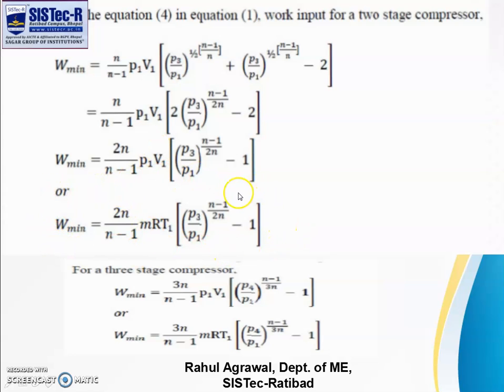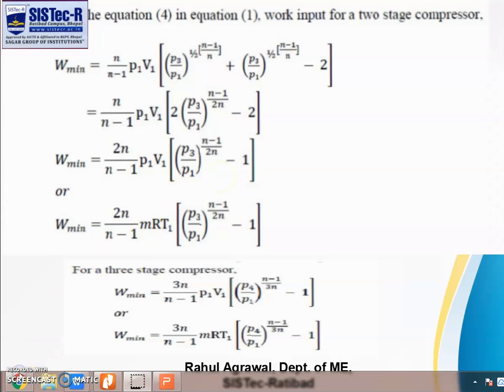We can also substitute P1V1 = mRT1. For three-stage compressor, the formula becomes (3n)/(n-1) P1V1 [(P4/P1)^(n-1)/(3n) - 1], or substituting P1V1, it's (3n)/(n-1) mRT1 [(P4/P1)^(n-1)/(3n) - 1].